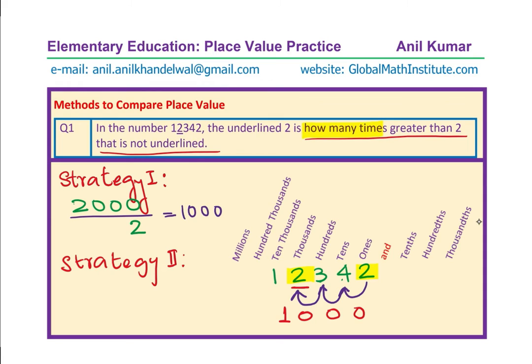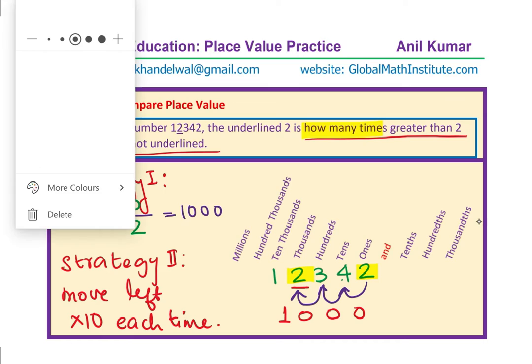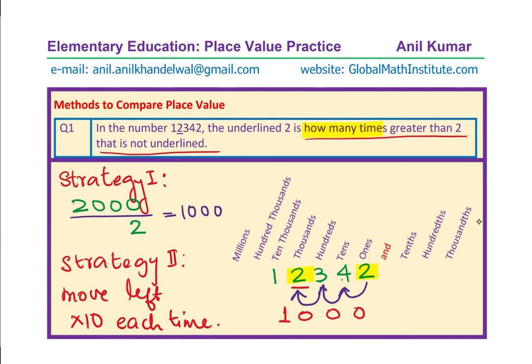So the movement from position to position gives the answer: 1,000. If you move left, it is times 10 each time. Moving from 2 to 4 to thousands gives 10, 100, 1,000. That becomes the answer. Both strategies can be utilized — strategy 2 is fast and very effective in most situations.